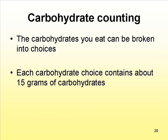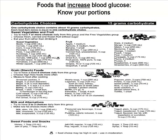Carbohydrate counting is really important, and the carbohydrate you eat can be broken into choices — a choice is like a portion. Each carbohydrate choice contains about 15 grams of carbohydrates. Looking at the foods that increase your blood glucose and focusing on portion size: one carbohydrate choice is the portion size indicated. So if you have a cup of beets, that's one portion, which equals one carbohydrate choice, or 15 grams of carbohydrates. If you have two cups of tomatoes, that's one carbohydrate choice. But just a few slices of tomatoes on your sandwich — that's a freebie and will not affect your sugar.